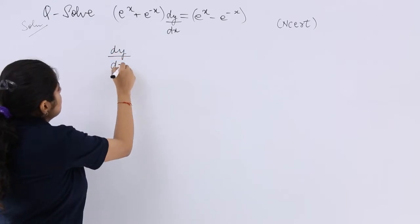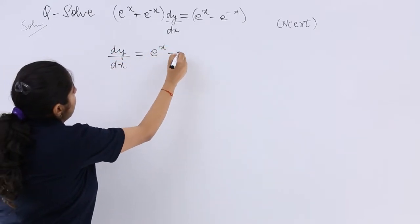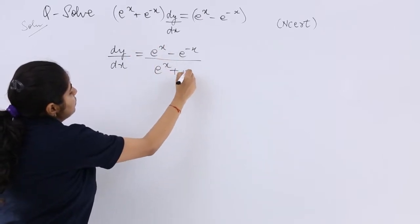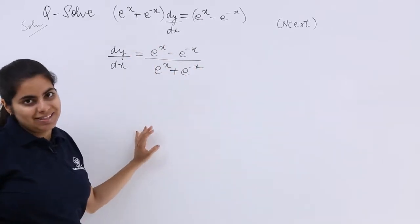So my dy/dx should be equal to (e^x - e^-x) / (e^x + e^-x).